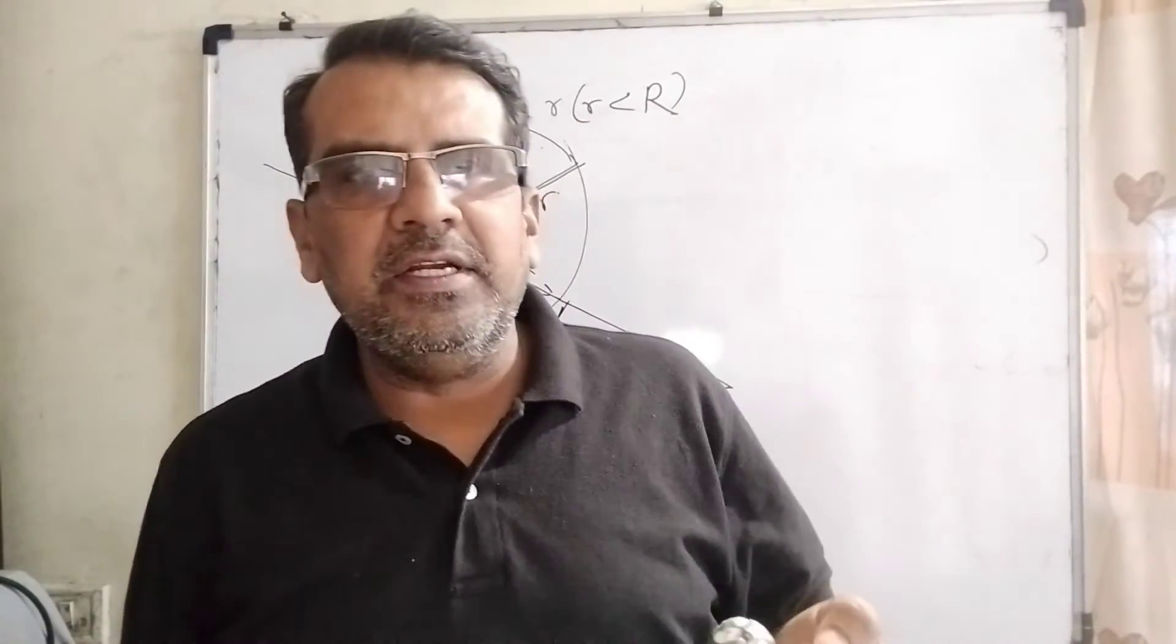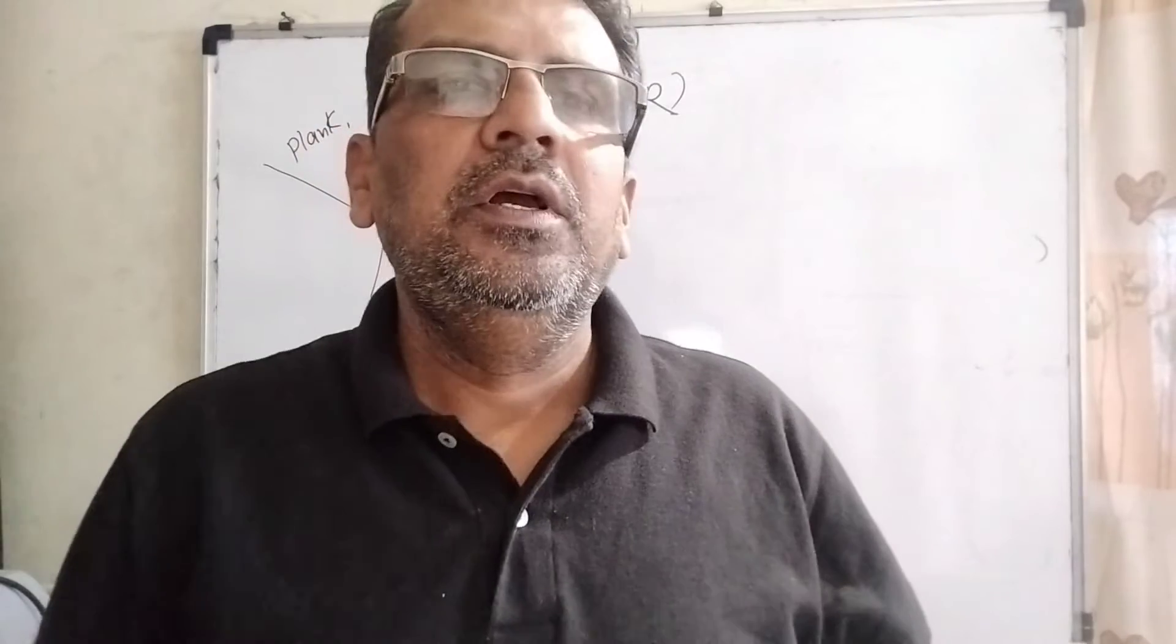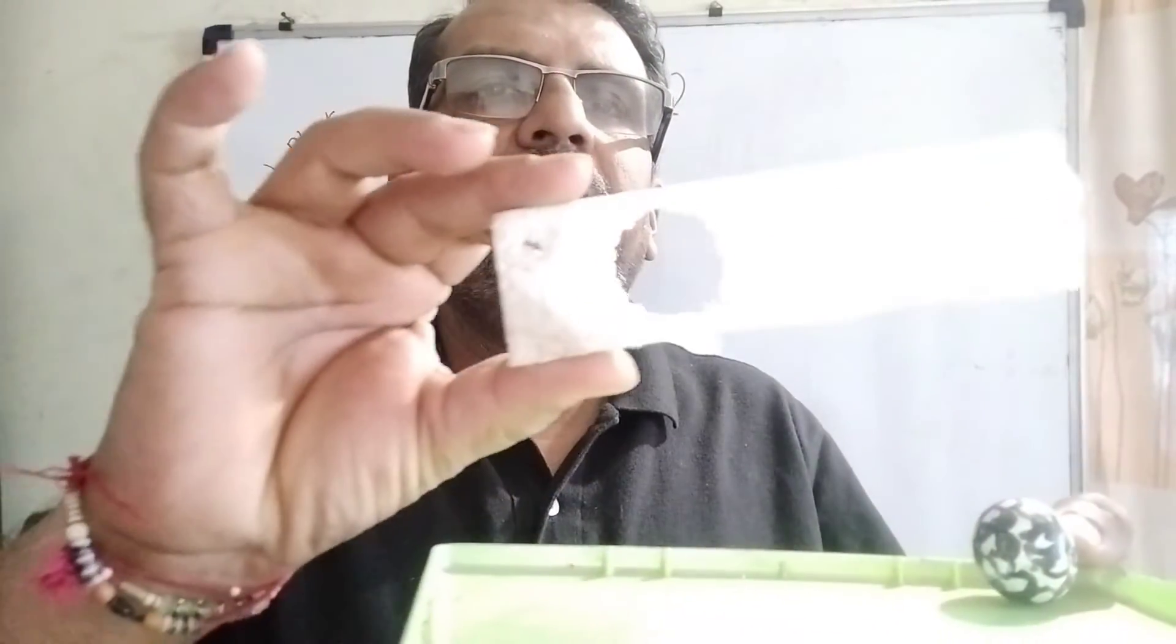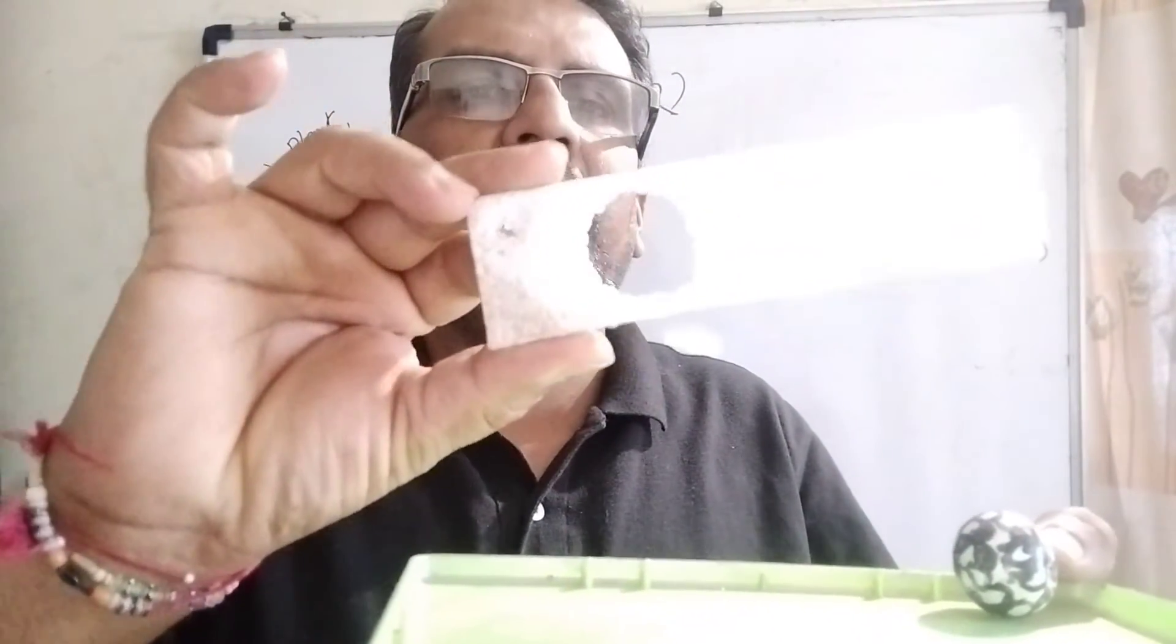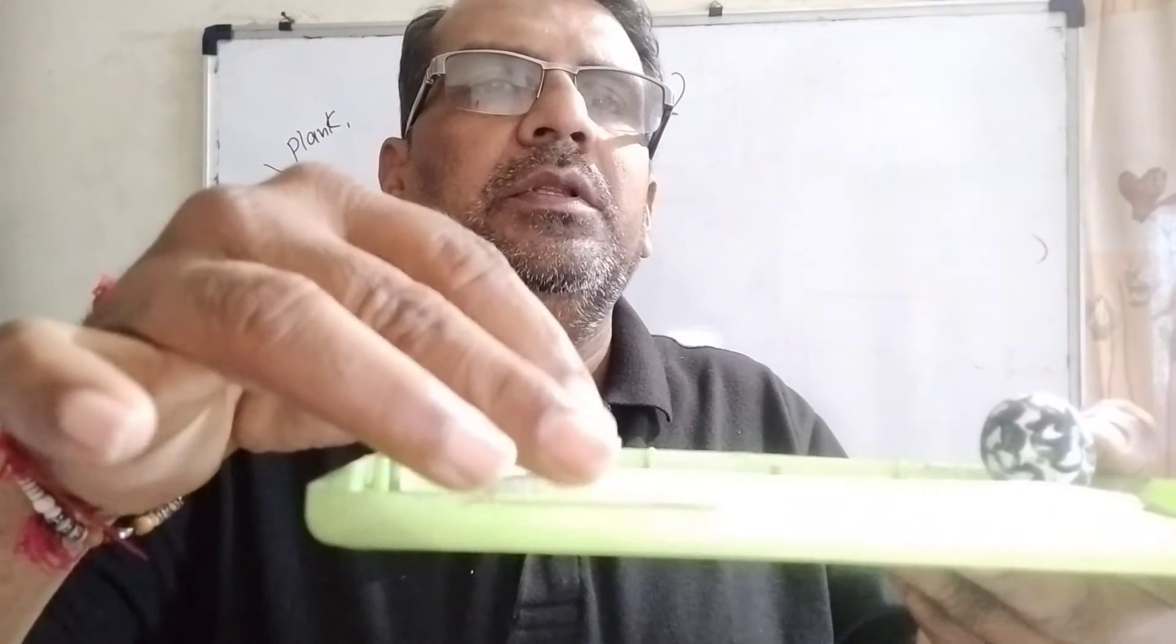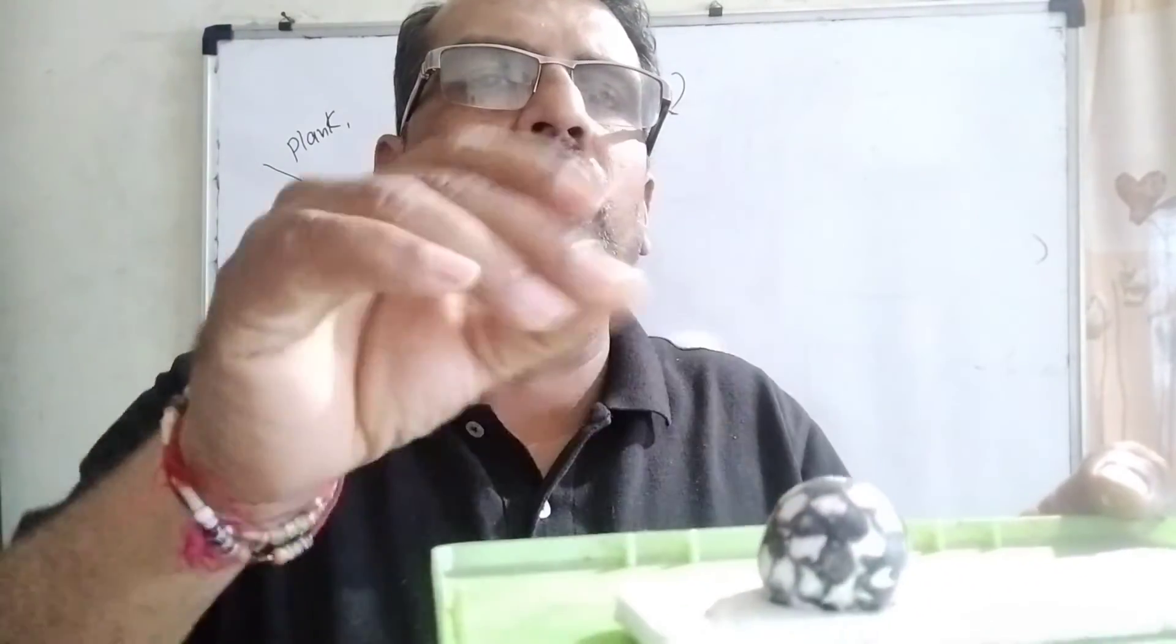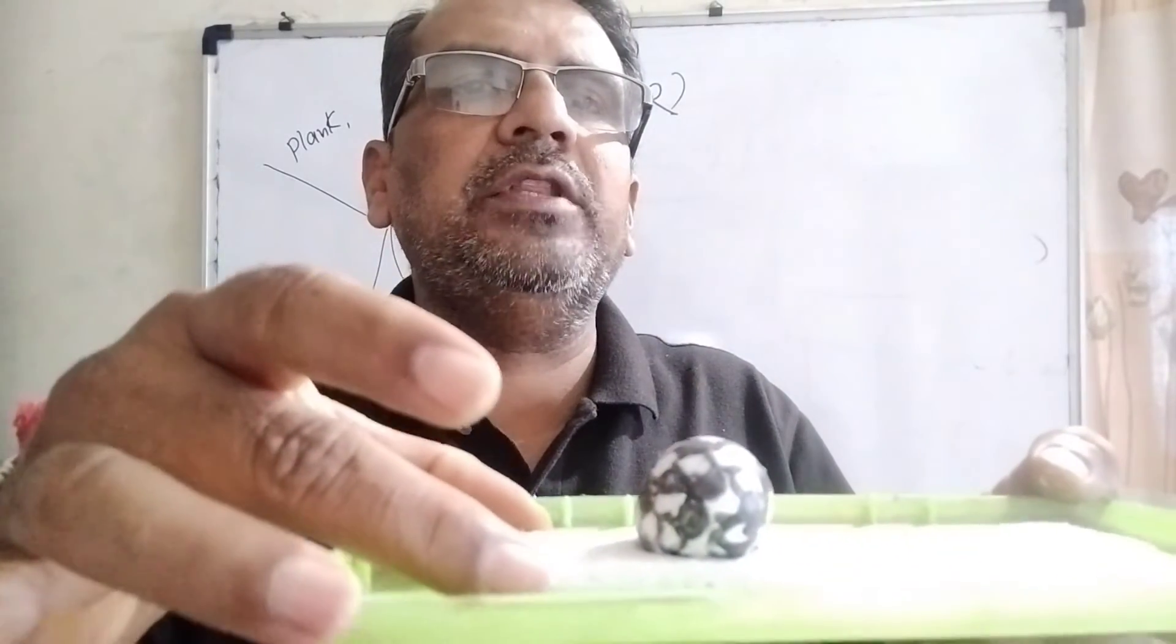You will better understand by seeing this experiment. Look at this plank with a hole of radius small r. The football is kept on this hole, and we have to find out the angle with the ground or horizontal theta.